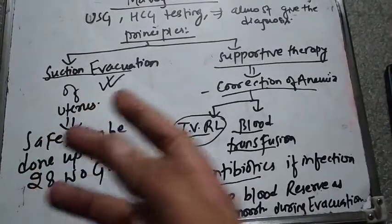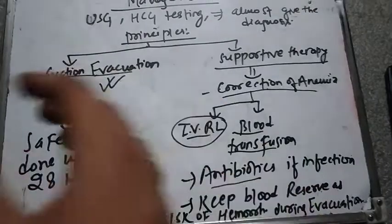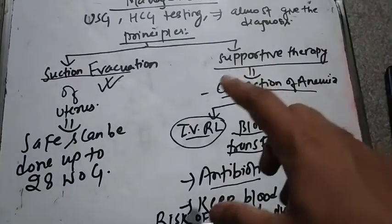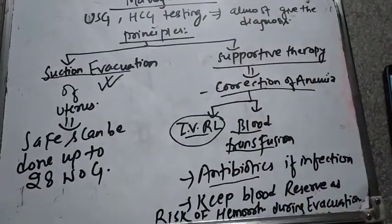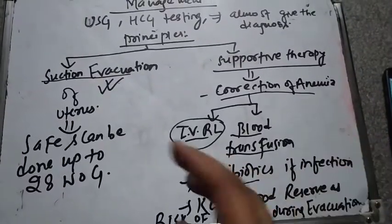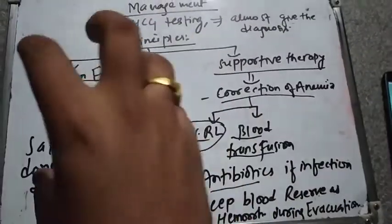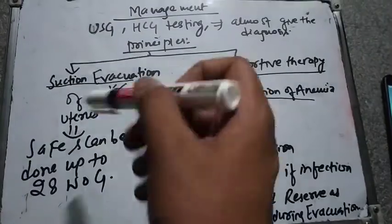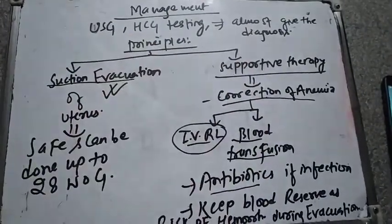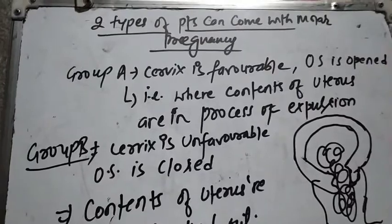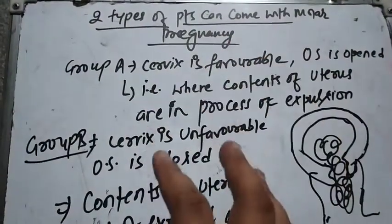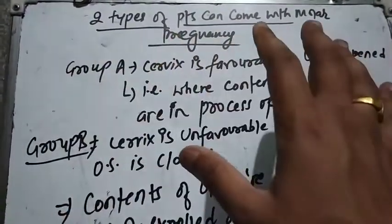So the main definitive treatment is suction evacuation of the uterus. We need to know that we can get two different types of patients with molar pregnancy.